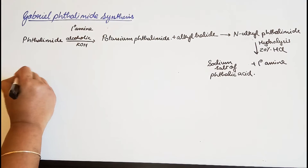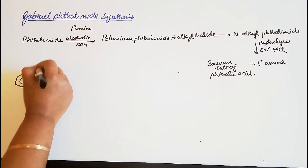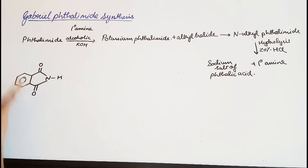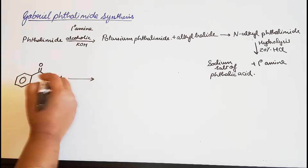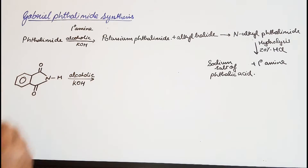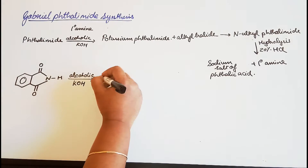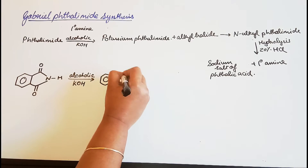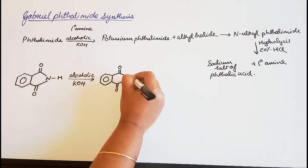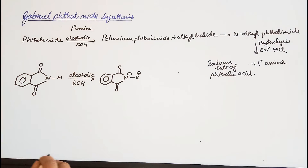Now let's write the reaction. We start with phthalimide, which has an NH group. On reaction with alcoholic KOH, the hydrogen attached to the nitrogen is replaced by a potassium atom, giving us potassium phthalimide. The nitrogen will carry a negative charge and potassium a positive charge.